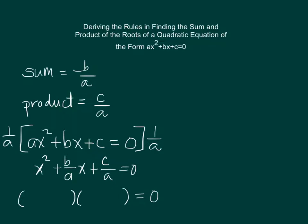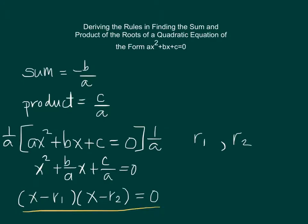Let's say, for example, that if we continue to solve for those roots and end up with roots r1 and r2, then the factored form of x squared plus b over a times x plus c over a equals zero should take the form of x minus r1 times x minus r2 equals zero.